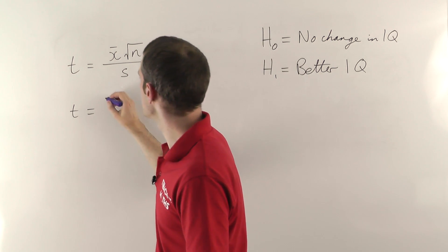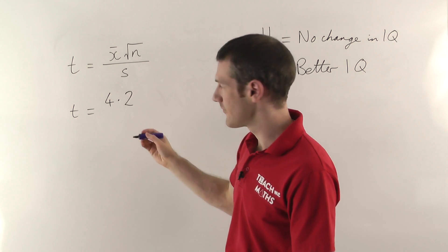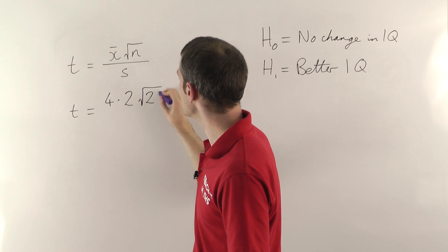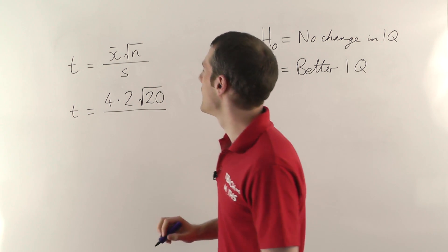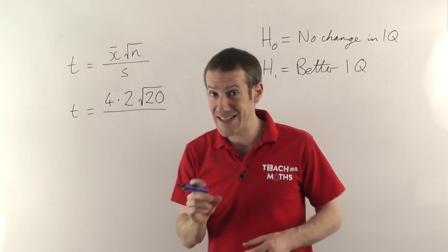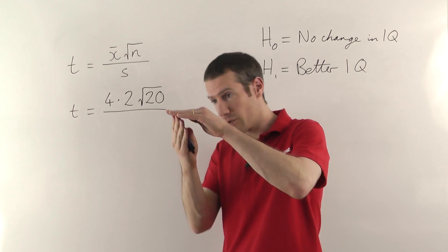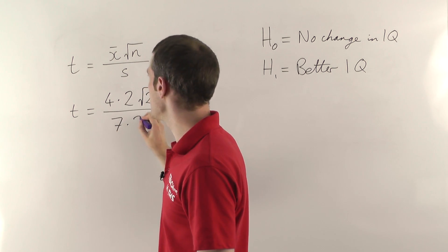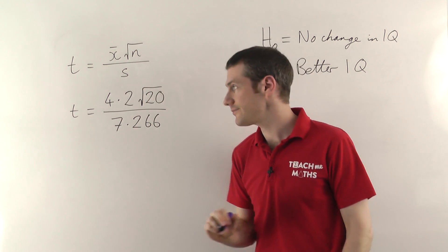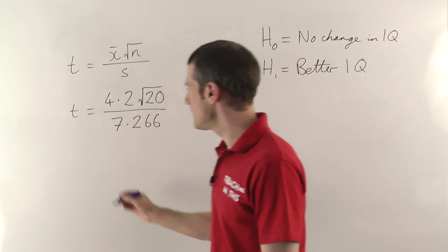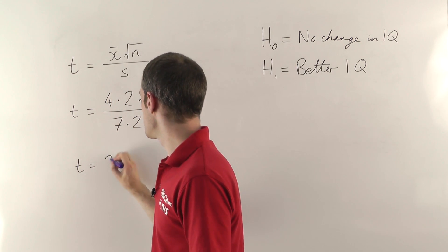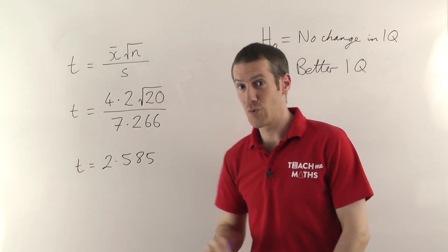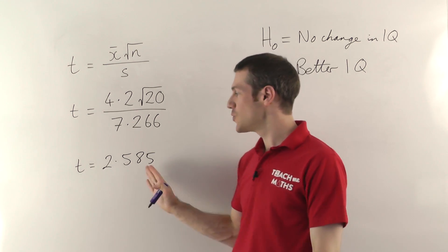Now if you then multiply that by root 20, because there are 20 patients in our sample, and we're going to divide that by the standard deviation. Again, this is the standard deviation of the differences. So that column with all the differences, you're finding the standard deviation of those, and in this case it turns out to be 7.266. So stick all this in a calculator and we get 2.585. So our t-statistic or t-value is 2.585.